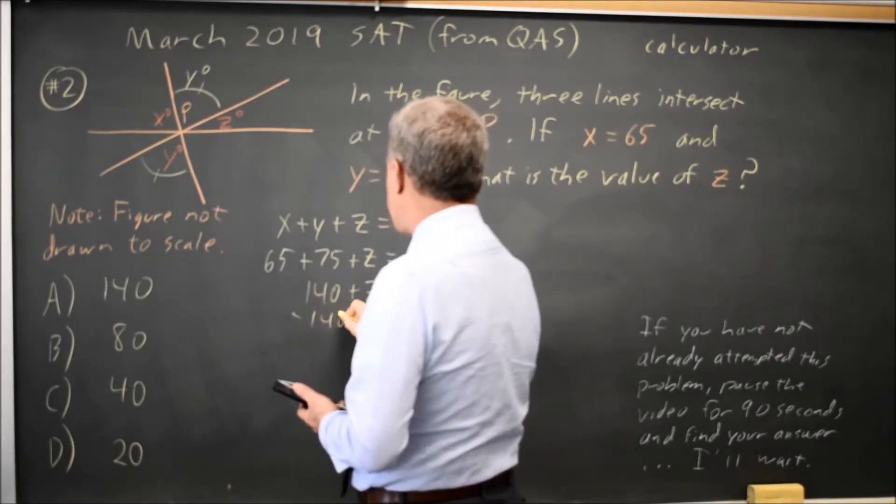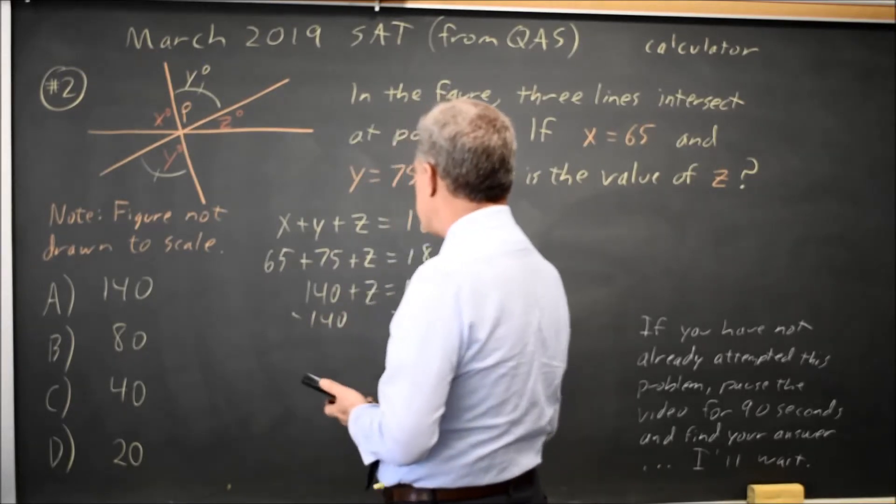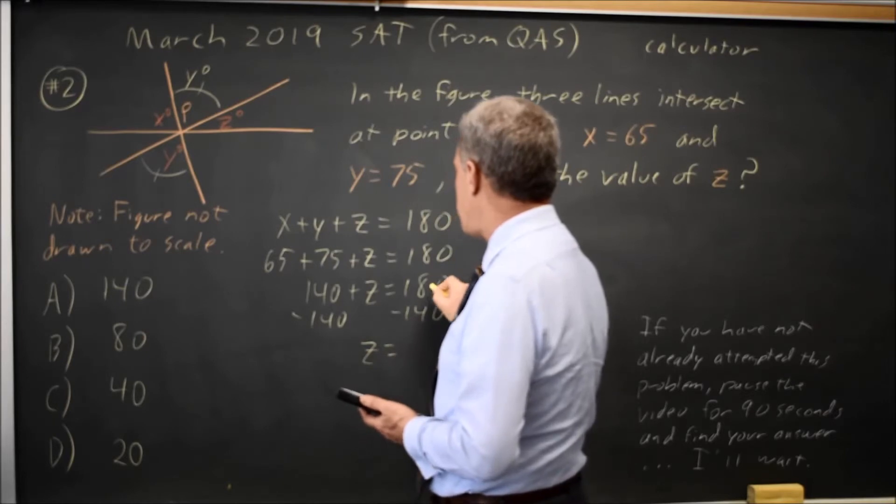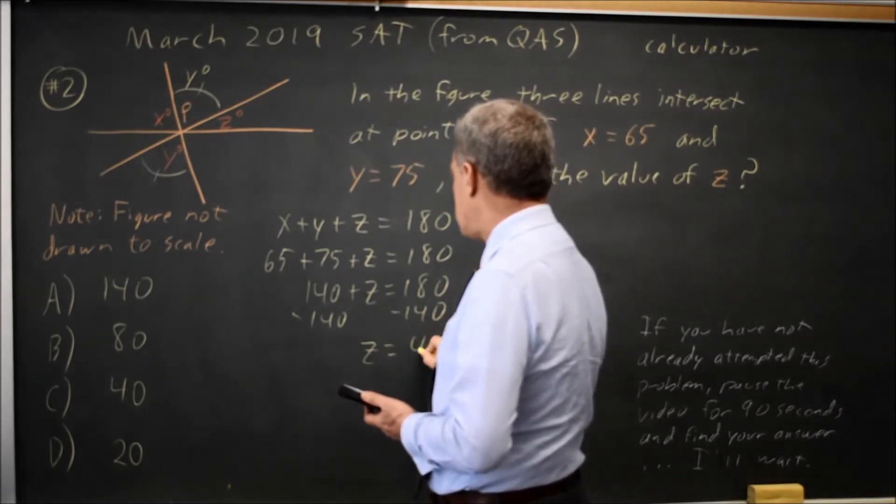If I subtract 140 from both sides, remember I always do the same thing to both sides of an equation, I get Z equals 180 minus 140 is 40.